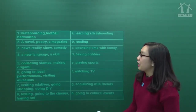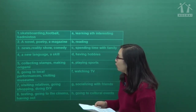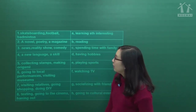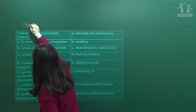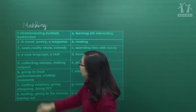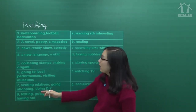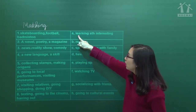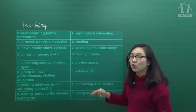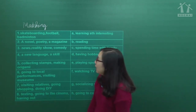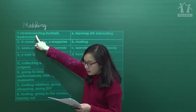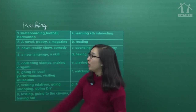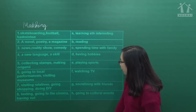Exercise number 3: you have to look at the words and match with the type of leisure activities - bài matching, nối. Cột đầu tiên có các activities, cột thứ hai là các category. Number one: skateboarding, football, badminton - trượt ván, bóng đá, cầu lông. The categories are: learning something interesting, reading, spending time with family, having hobbies, playing sport, and more.